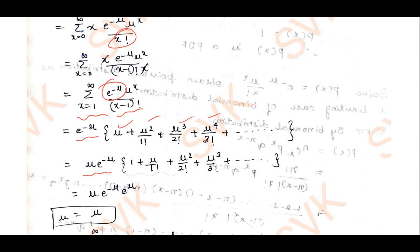Observing these terms, mu is common in each. Taking out mu, we get mu into e to the power minus mu, times the series 1 plus mu by 1 factorial plus mu squared by 2 factorial plus mu cubed by 3 factorial plus etc. This is the Maclaurin series expansion of e to the power x, so with x replaced by mu, it equals e to the power mu.